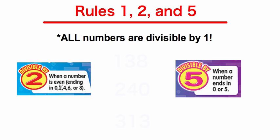The rule for 2 says: when a number is even, ending in 0, 2, 4, 6, or 8, it is divisible by 2. And the rule for 5 is: when a number ends in 0 or 5, it will be divisible by 5.